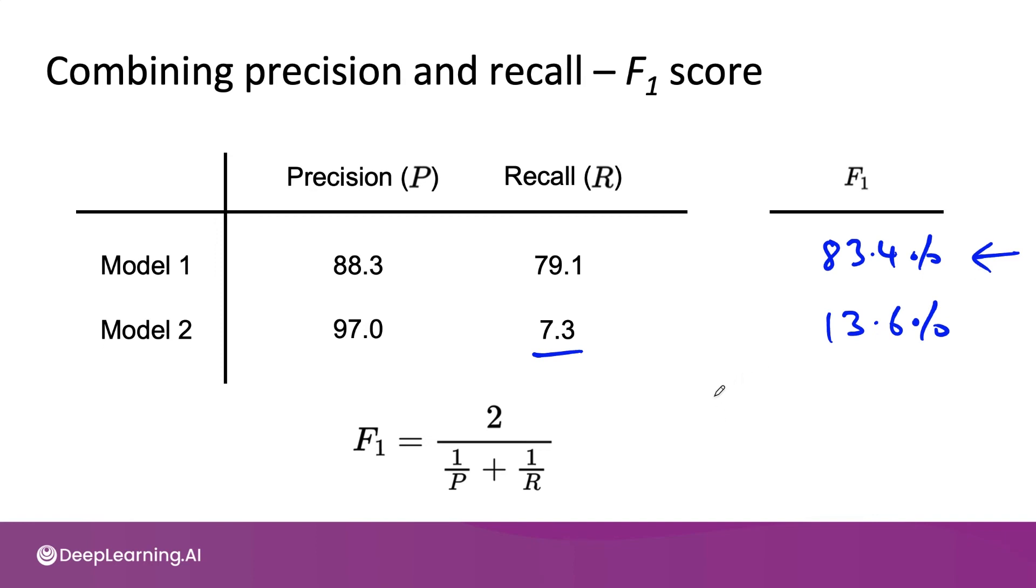For your application, you may have a different weighting between precision and recall. And so F1 isn't the only way to combine precision and recall. It's just one metric that's commonly used for many applications.